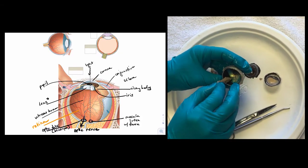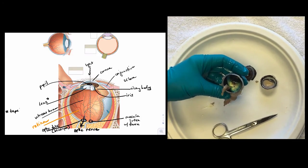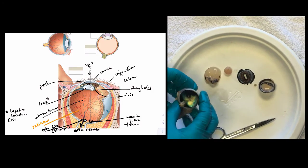What's left in many animals is this shiny shell-like structure called the tapetum lucidum. This reflects light and is useful for night vision. This is not present in humans.